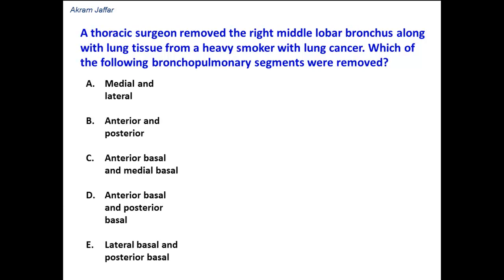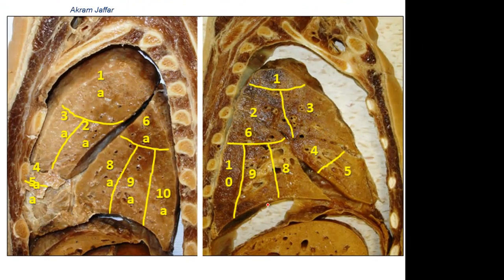Answering this question requires knowledge of the lobes and segments of the lung. The right lung has three lobes: upper lobe, middle lobe, and lower lobe. The left lung has two lobes, an upper lobe and a lower lobe, separated by an oblique fissure, while on the right side we have an oblique fissure and a transverse fissure.